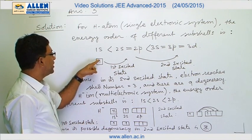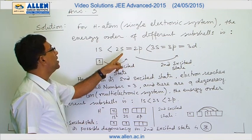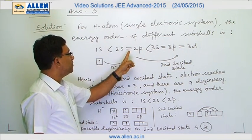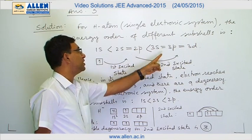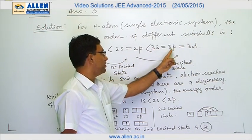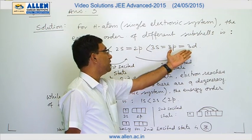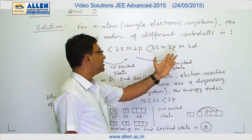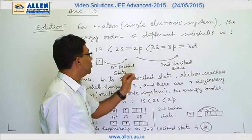The electron in the first excited state goes from 1s to the second shell (n=2). In the second excited state, it goes from the second shell to the third shell. In the third shell, all subshell energies are equal, and there are a total of nine subshells.